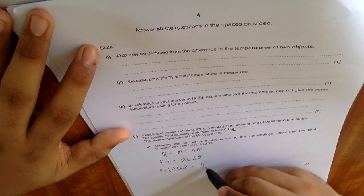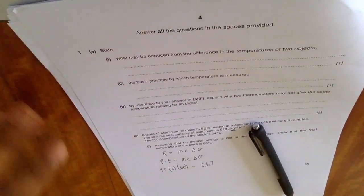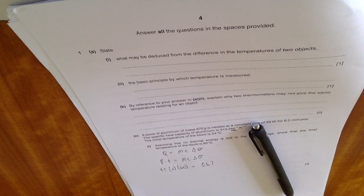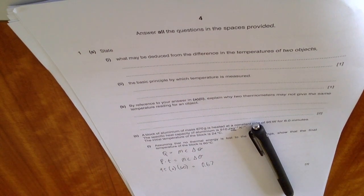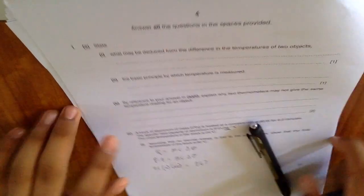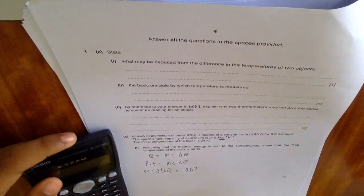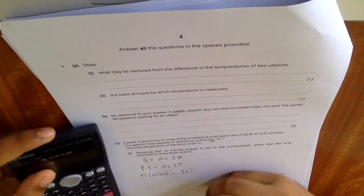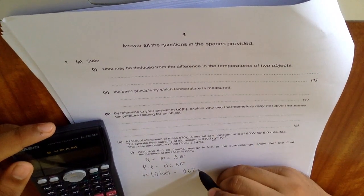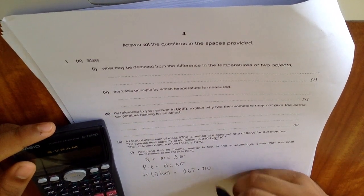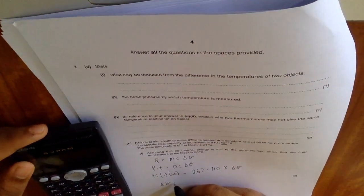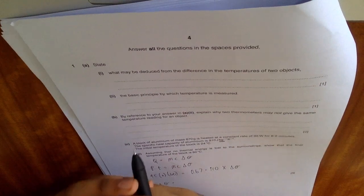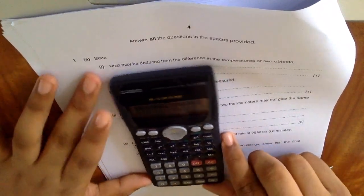Let me just grab my calculator, we will get this job done. And the c is 910, and the delta theta is something we don't know. Delta theta is equal to 95 into 6 into 60.